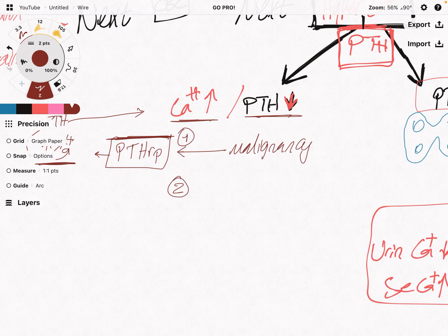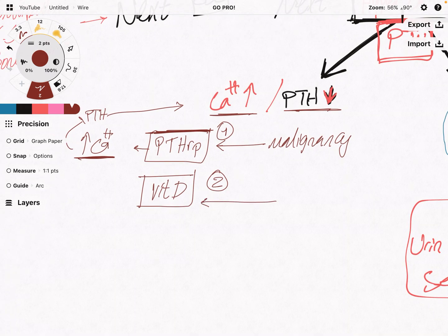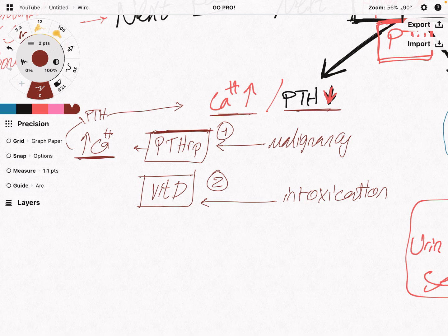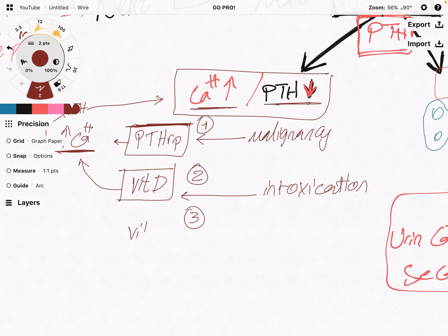The second cause is very high vitamin D level. Where does it come from? It can be an intoxication — for example, an elderly lady was told her bones are not good, she refused bisphosphonate, and decided to take too much vitamin D. This excess vitamin D has increased calcium reabsorption from the gut and inhibited the parathyroid hormone, leading to high calcium level and low parathyroid hormone. Or, the vitamin D is not from supplements but is endogenous — produced by the body itself.